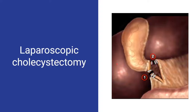To perform the surgery, we typically will place small clips — titanium metal clips — on the cystic duct and artery, shown here as number one and number two, and then divide those structures and remove the gallbladder. This surgery typically takes about 20 minutes, and you do go home the same day.